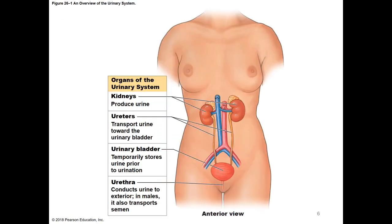Here's a picture of the basic components of the urinary system. We have our two kidneys, each connected to a ureter that drains down to the bladder. We produce urine in the kidneys, drain it down the ureters to the bladder where it is temporarily stored until full, and once the bladder contracts, we push the urine through the urethra and out of the body.